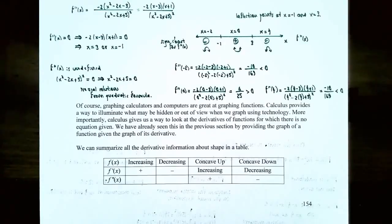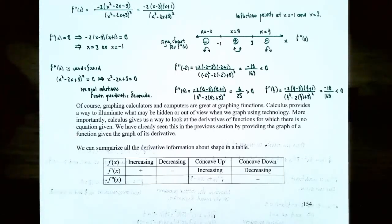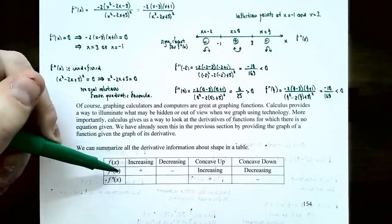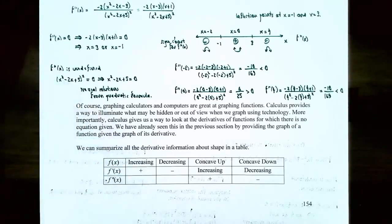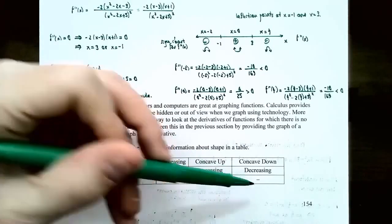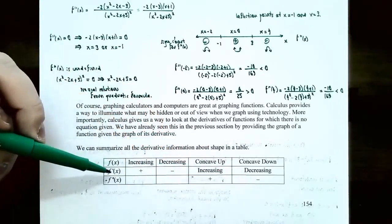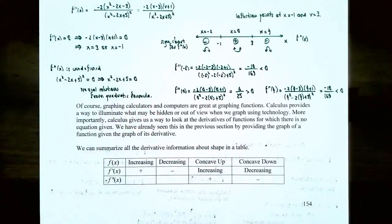Graphing calculators and computers are great at graphing functions, but calculus eliminates what may be hidden or out of view on a graph. More importantly, calculus gives a way to analyze derivatives when no equation is given. The function f(x) is increasing if f'(x) is positive and decreasing if f'(x) is negative. The function is concave up if the second derivative is positive and concave down if the second derivative is negative — equivalently, the slopes of tangent lines are increasing or decreasing.